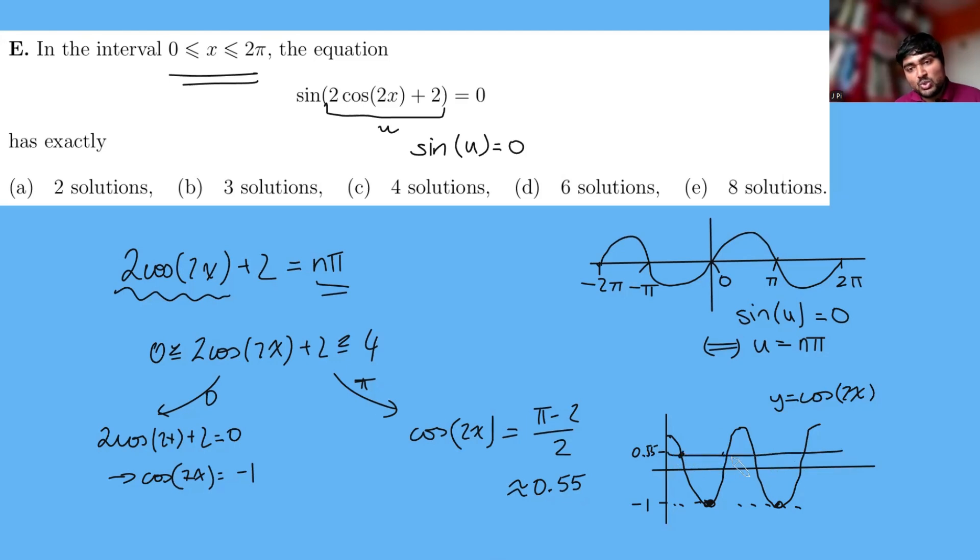And how many times does that intersect the graph? Well, that's 1, 2, 3, 4. So we have another four solutions there. So 4 plus 2 gives us six solutions. And that is the answer to this problem. We have six solutions to this equation.